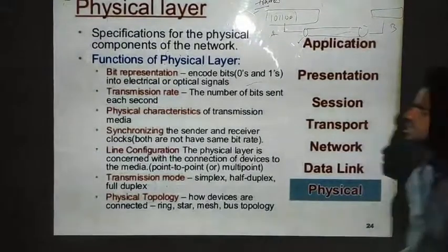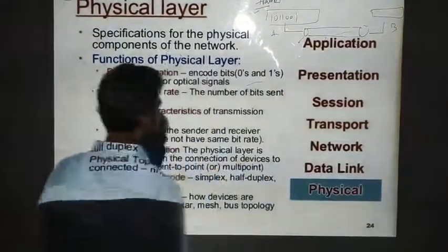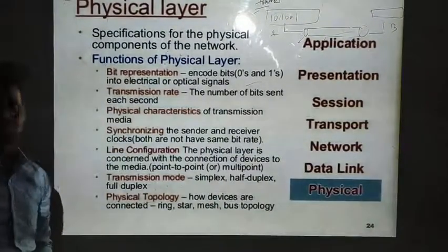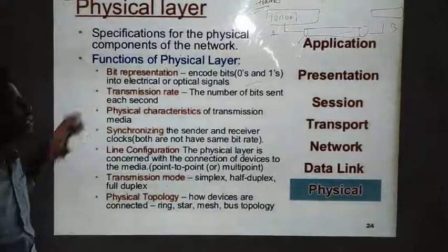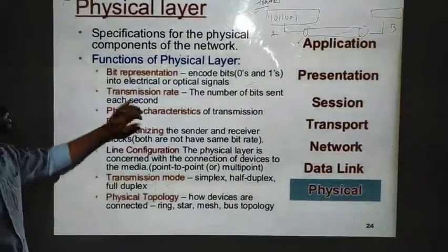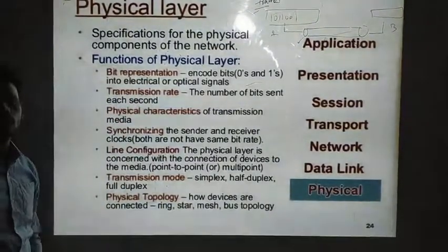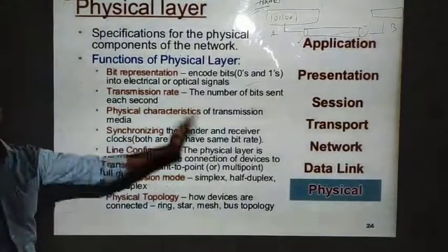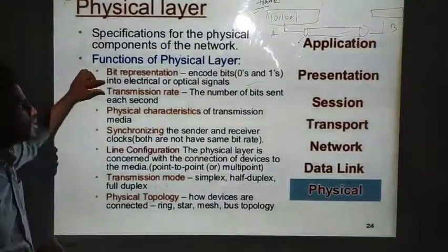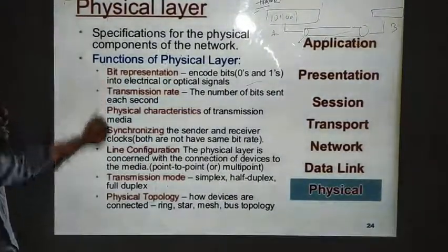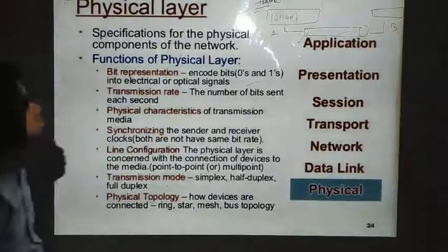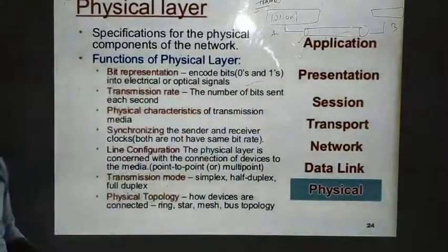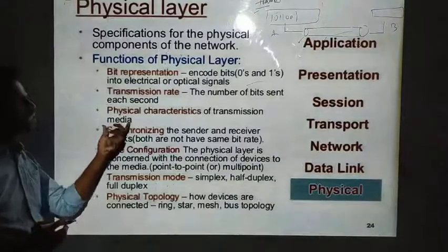The physical layer also defines how many bits should be sent per second — the transmission rate. How many bits are sent from system A to system B, and in what range we are sending, is governed by the transmission rate. Additionally, the physical characteristics of the transmission medium you are going to use are defined by the physical layer.